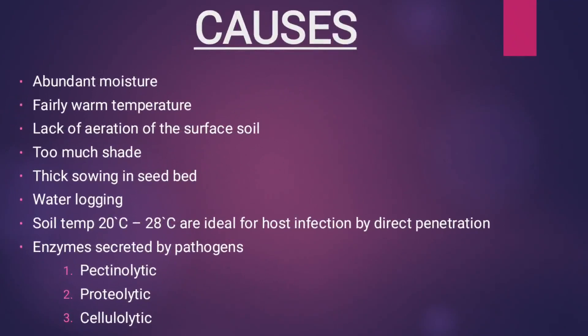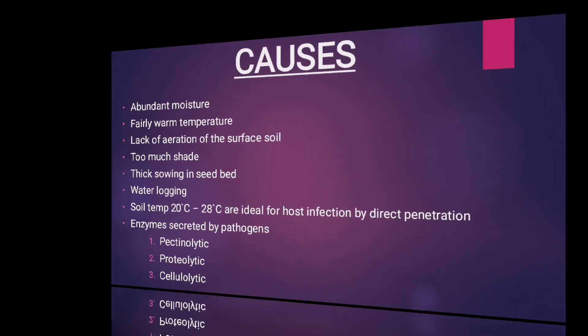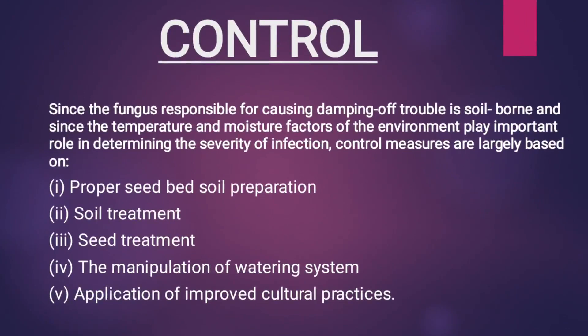Here are all the possible causes of the disease: abundant moisture, warm weather, fairly warm temperature, lack of aeration of the soil, too much shade, thin soil, water-logging. The temperature of 20 to 28 degrees Celsius is very effective for the attack of the disease. Here are the enzymes produced by the pathogens.